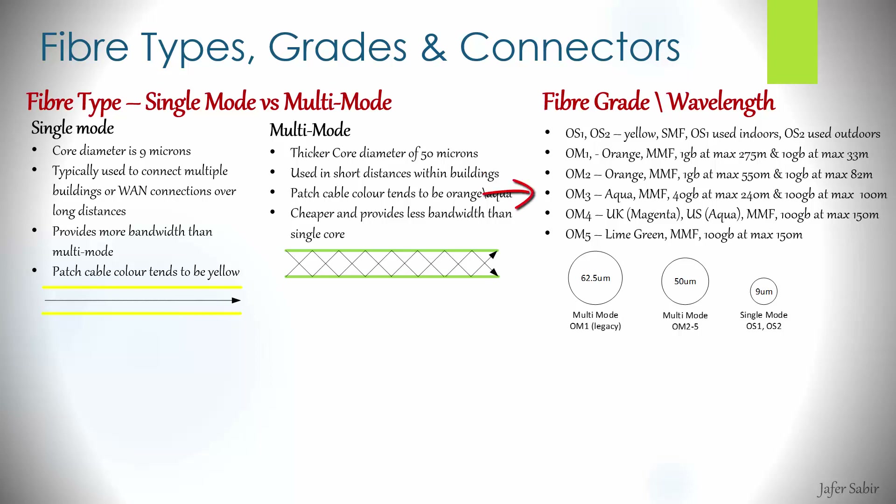OM3 is aqua in color and can do 40 gigabits of bandwidth at 240 meters, and also 10 gig at 100 meters. OM3 seems to be the most widely used grade of cable today, with OM4 probably being second.